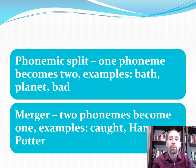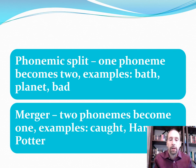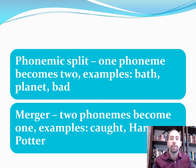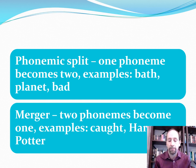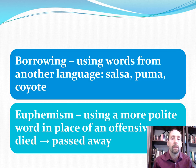Phonemic split is when one phoneme becomes two, depending on dialect. For example, I might say 'bath' but others might say 'bath' with the vowel spread out, or 'planet' versus 'planet.' Conversely, two vowels might merge — in British English someone might say 'caught' differently, or 'Harry Potter' versus my pronunciation. Some people have these as two phonemes while others merge them into one, depending on dialect or pronunciation preference.